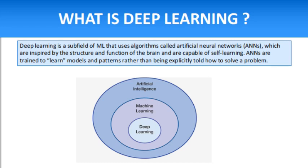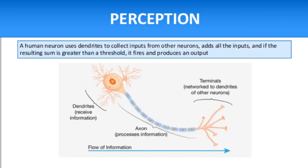Deep learning is a subfield of machine learning that uses algorithms called artificial neural networks (ANN), which are inspired by the structure and functions of the brain and are capable of self-learning. ANNs are trained to learn models and patterns rather than being explicitly told how to solve a problem.